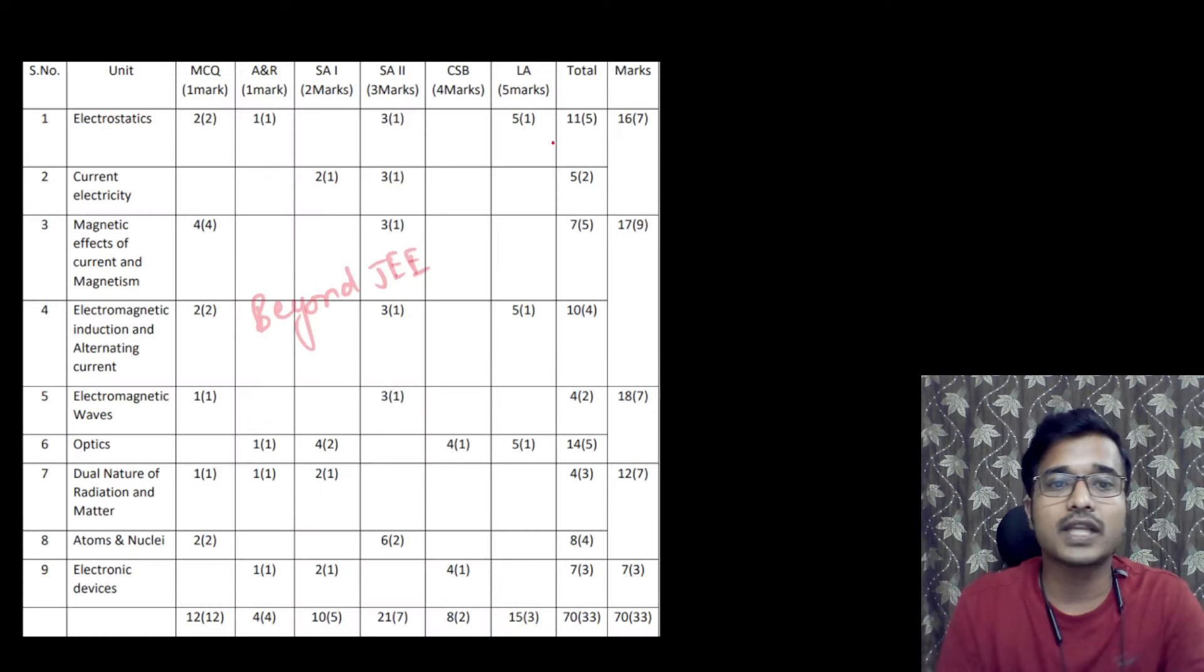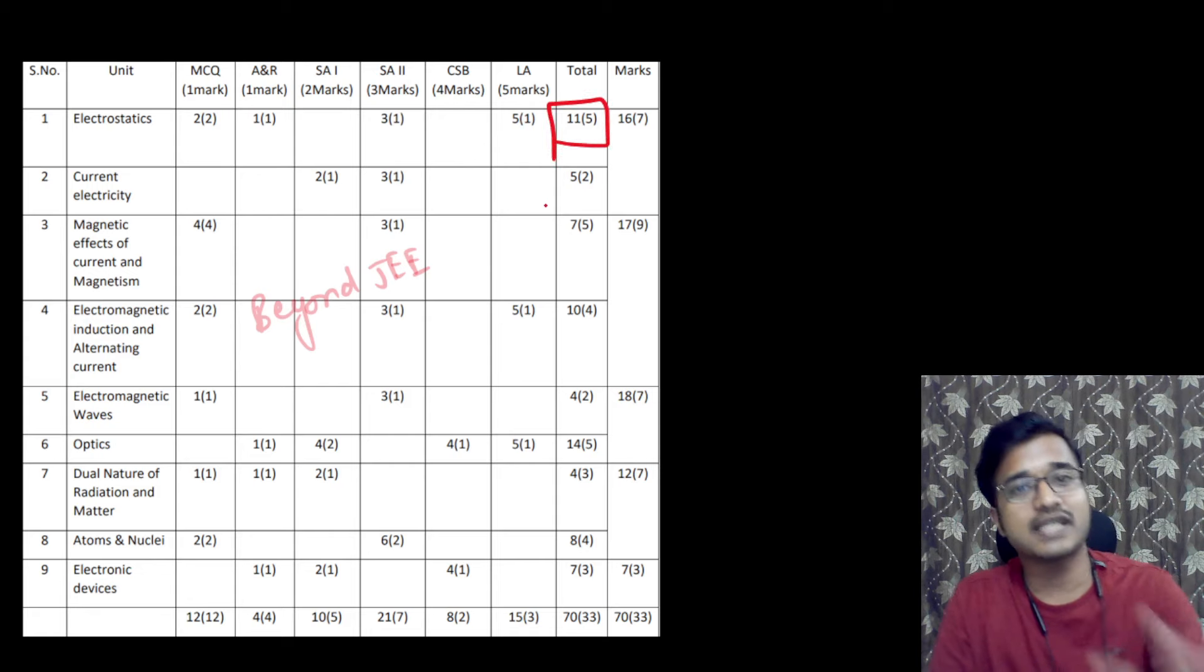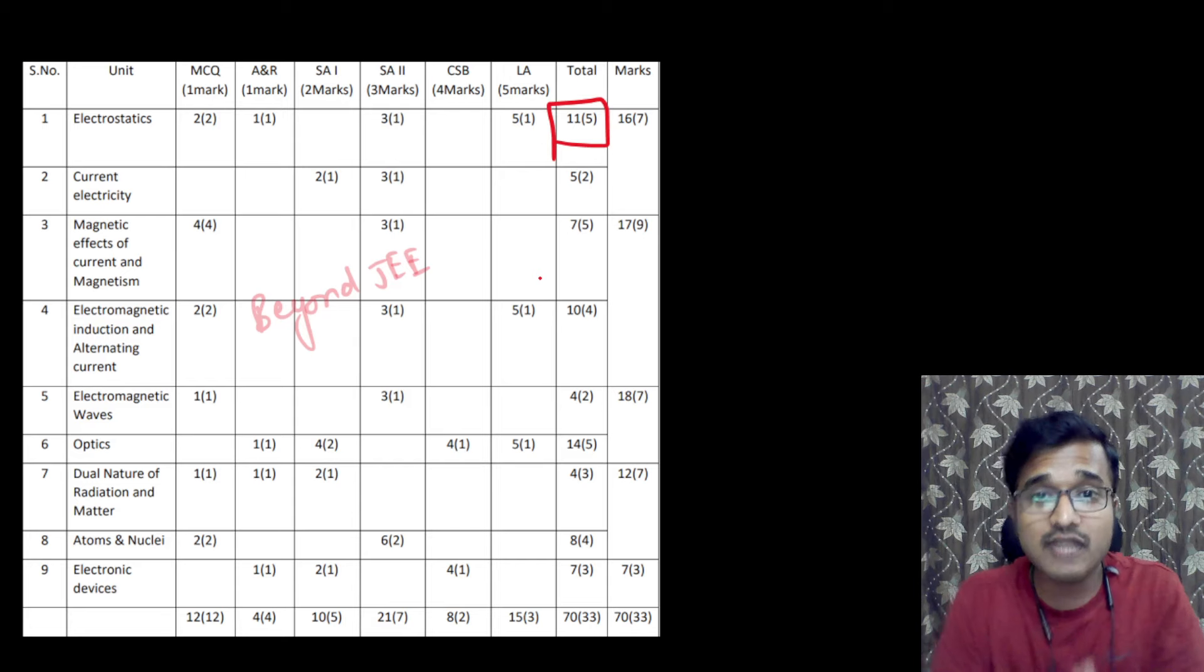The third blueprint we have prepared for you. The weightage of electrostatics is the blueprint that was originally given. So you have to keep these three papers in a good way, so that you have clarity on things. And here we have to keep the question of wave optics that you have to prepare.